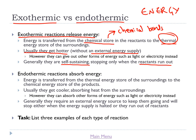On the other hand, we've got endothermic reactions. Endothermic reactions are reactions that absorb energy. Energy is transferred from the thermal energy store of the surroundings to the chemical energy store of the products. Another way to say that is that the chemical bonds of the products have more energy than the chemical bonds of the reactants, and they've gained that energy by absorbing it from the surroundings.